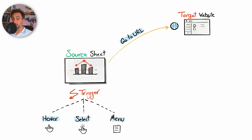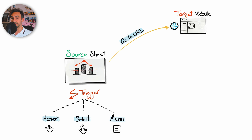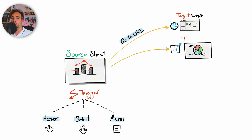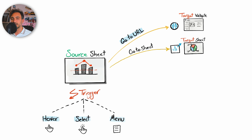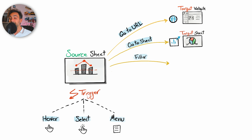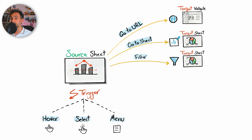The first option is Go to URL, which means Tableau will jump from Tableau to an external website — so the target here is a website, not a visualization. The second option is to go to another worksheet or another dashboard, so here we are moving from one worksheet to another. The third is the Filter action, where actions you perform on the source sheet affect the filtering in the target sheet.